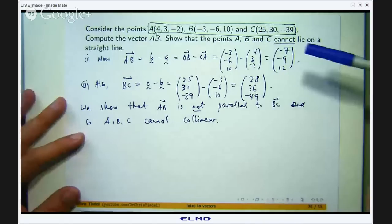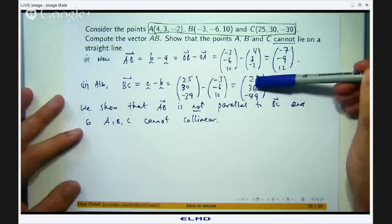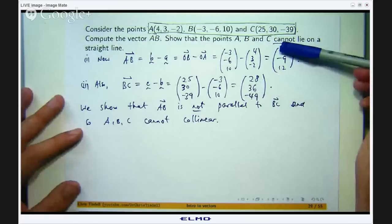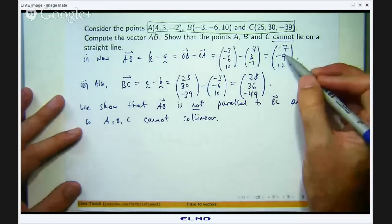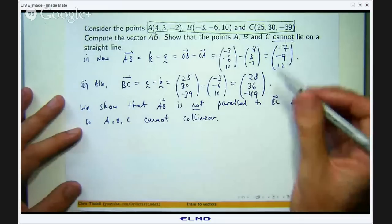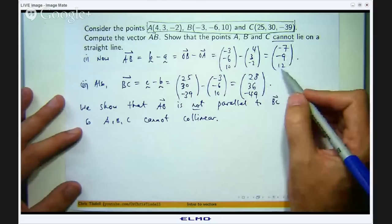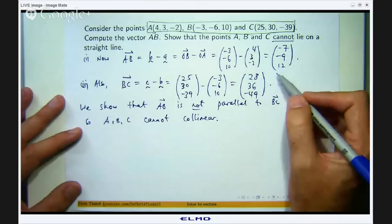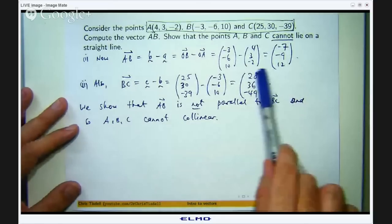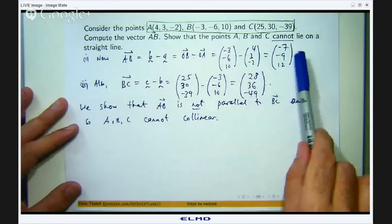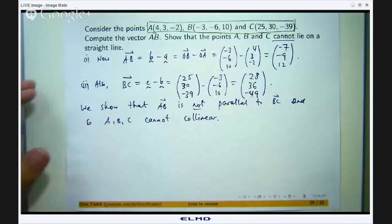Okay, so let us just compare what we have got here. We have got negative 7 and 28. Well, if I times negative 7 by negative 4, I get 28. If I times negative 9 by negative 4, that same number, I will get 36. But if I times 12 by that same number, negative 4, I do not get negative 49. So this is definitely not a scalar multiple of this because the same number does not work for all of the three entries.